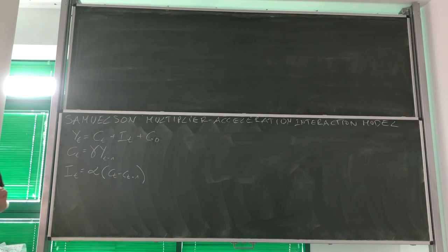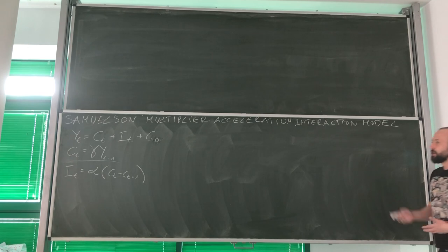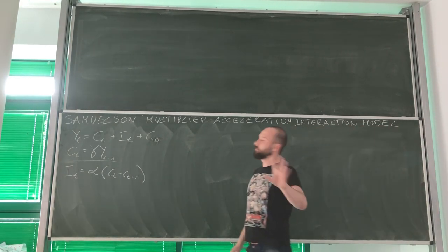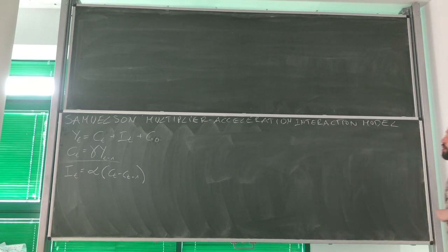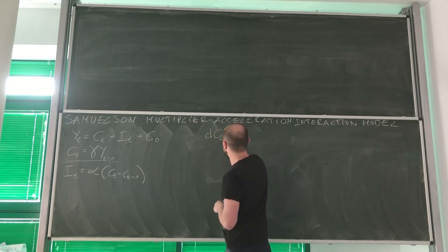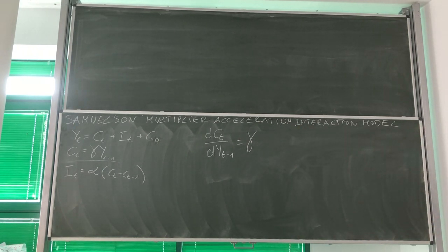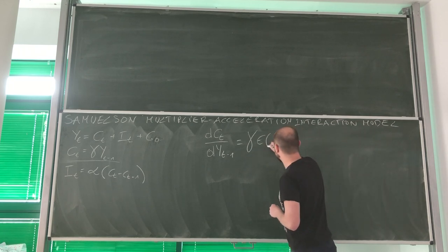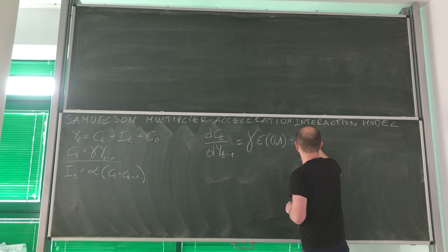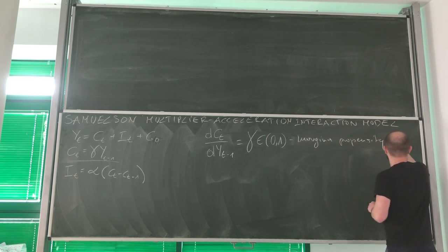Let's look down now, and here we've got consumption function. Here we do not introduce taxes, just not to complicate things. So here, income and disposable income are the same thing. What do we see here? If I differentiate C_T with respect to Y_{T-1}, I'm getting back gamma. And this gamma, of course, must be between 0 and 1. And this is our marginal propensity to consume.